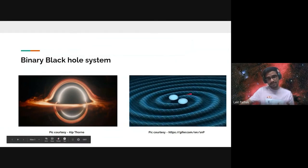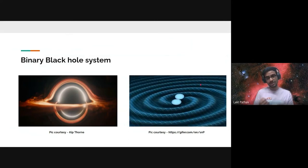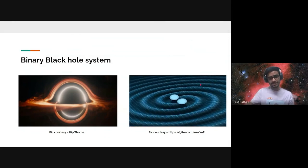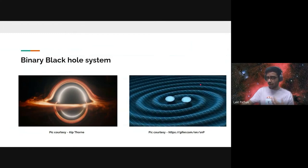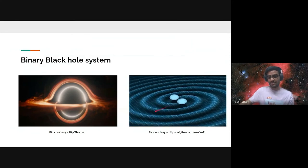On the right, we have a binary black hole system, which as the name suggests, consists of two black holes in orbit around each other. In close orbits, such systems radiate energy through gravitational waves and their orbit keeps shrinking. This process continues until they collide and become a larger black hole.